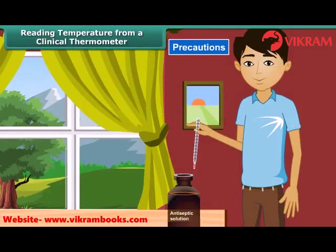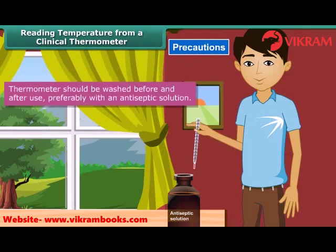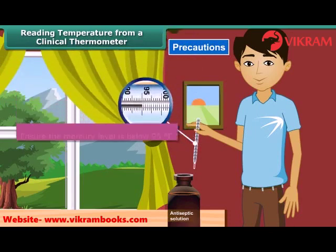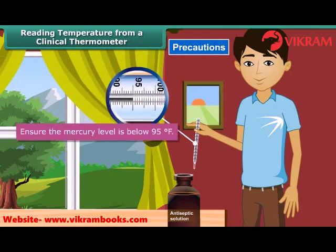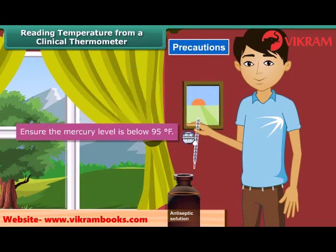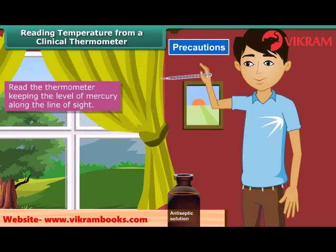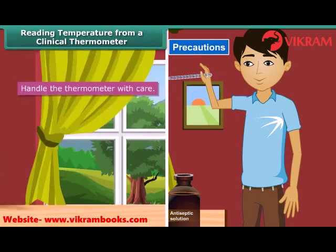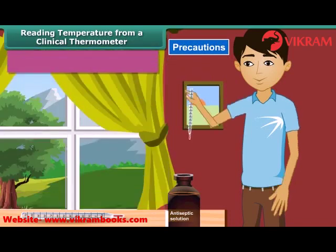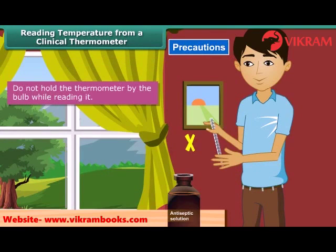Precautions to be observed while reading a clinical thermometer are as follows: the thermometer should be washed before and after use, preferably with an antiseptic solution; ensure the mercury level is below 95 degrees Fahrenheit; read the thermometer keeping the level of mercury along the line of sight; handle the thermometer with care — if it hits against some hard object, it can break; do not hold the thermometer by the bulb while reading it.